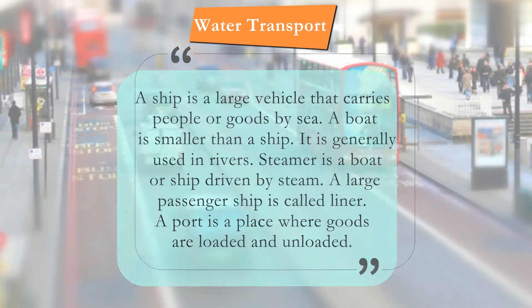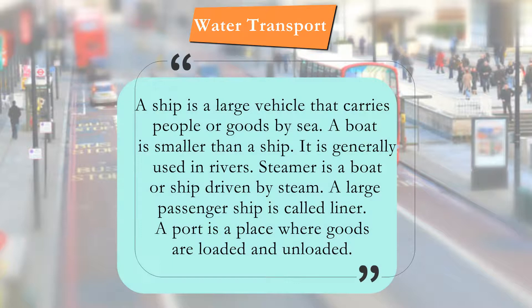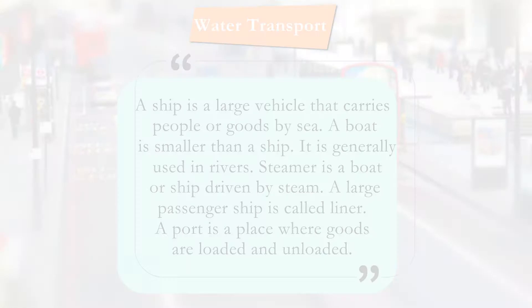A ship is a large vehicle that carries people or goods by sea. A boat is smaller than a ship. It is generally used in rivers. A steamer is a boat or ship driven by steam. A large passenger ship is called a liner. A port is a place where goods are loaded and unloaded.